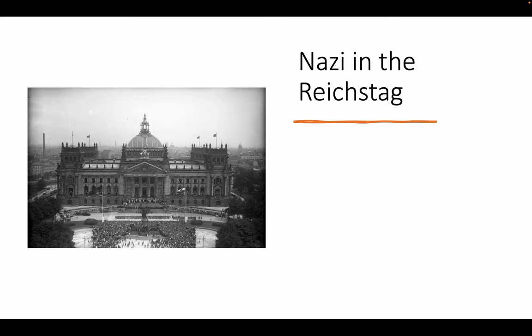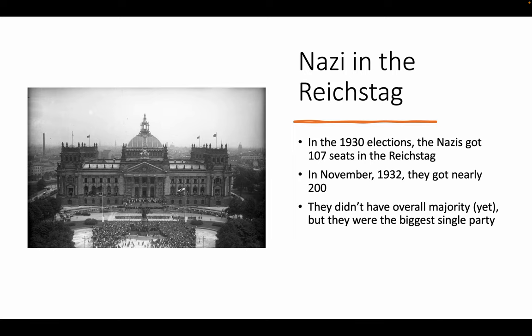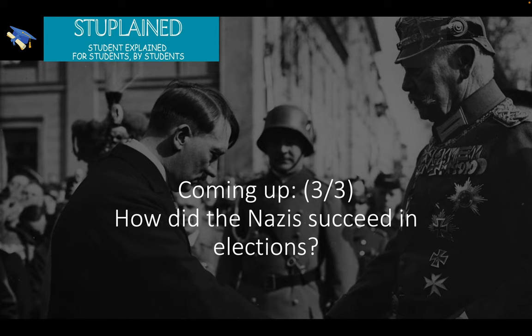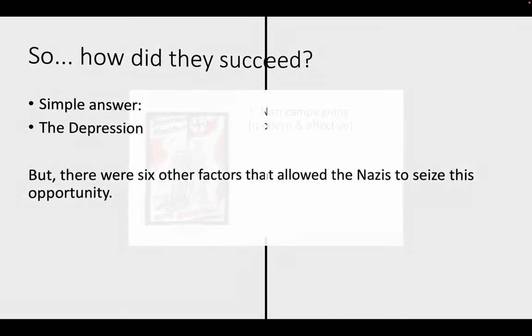In the 1930 elections, the Nazis got 107 Reichstag seats, up from around 30. By November 1932, they had almost 200 seats — nearly doubling in two years. They still didn't have an overall majority of 50%, but they were now the biggest single party in Germany. In just ten years, the Nazis had gone from 55 members to the most popular party in Germany. The simple answer for their success was the Great Depression, but there were six other factors that allowed the Nazis to seize this opportunity.